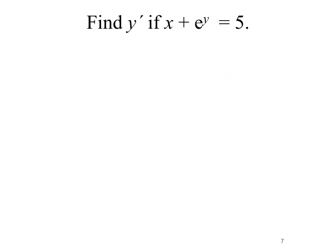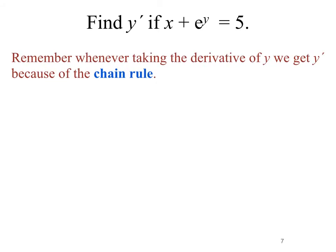Now let's look at an example. We want to find y prime if x plus e to the y equals 5. The first thing we want to remember is whenever taking the derivative of y we get y prime because of the chain rule. We also want to recognize that x plus e to the y equals 5 is certainly an implicit function, so we'll use our implicit differentiation here.